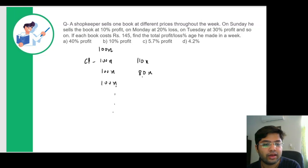Day three, it would be, since it's 30% profit, so 130X and now you can see a pattern emerging. So on day four, it will be 40% loss, so 60X.